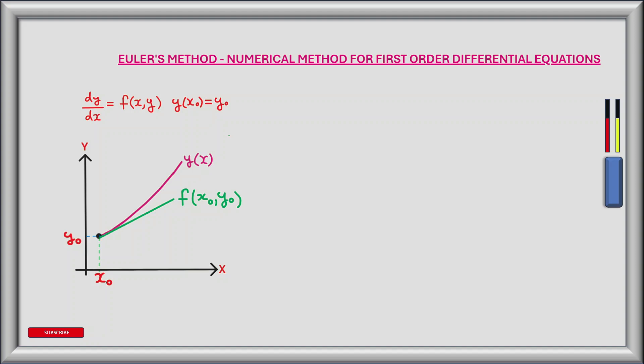I've graphed the function y(x) in purple. This is unknown and the solution to the differential equation. What we do know is an initial value or starting point on the curve marked here as (x₀, y₀). I've also drawn in the tangent to the curve at our starting point, shown here as the green line.